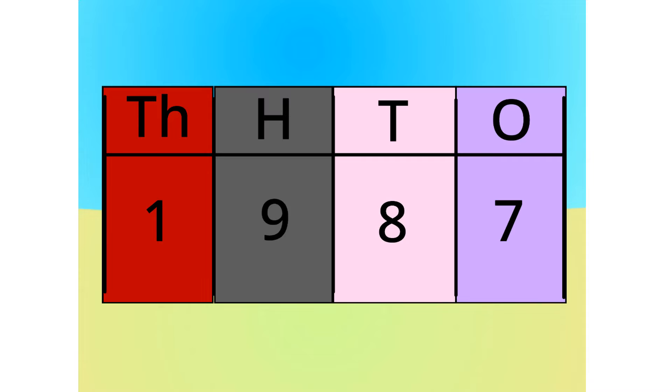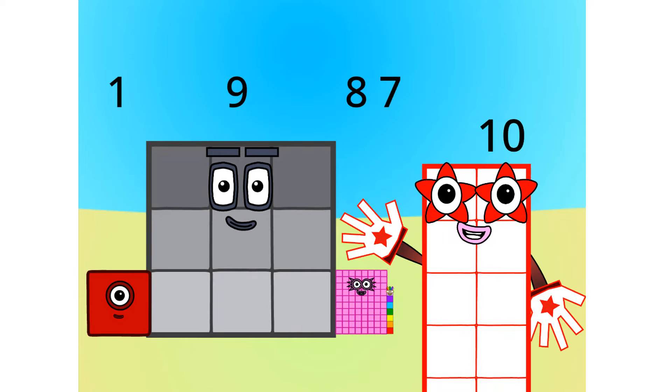See, let's see this in block form, shall we? As you can see, this number is 1,900, 8 tens, and 7 ones.